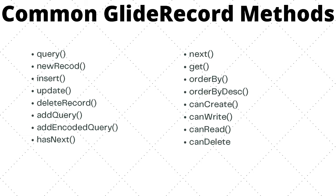Next is deleteRecord, which deletes the record. We also have the addQuery method, which adds a filter to the SQL query — we have seen this in the past couple of videos. Next in the list we have addEncodedQuery, which is very powerful and accepts an encoded string. It essentially takes the encoded query, processes it, and generates the SQL for us. It is very similar to addQuery but can be a little more powerful and requires less code.